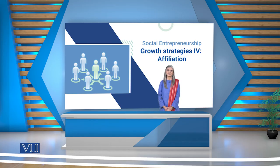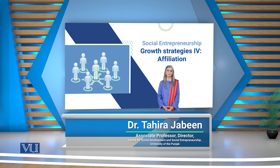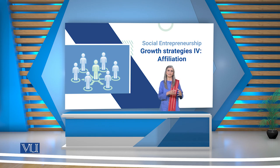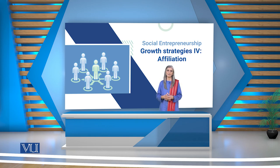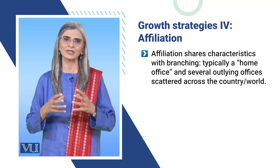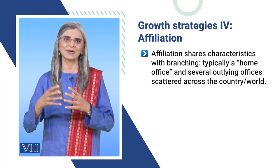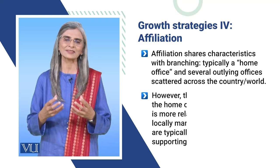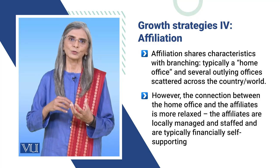Assalamualaikum students. Scaling के हवाले से एक scaling strategy जो popularly social entrepreneurs use करते हैं वो है affiliation. Affiliation की काफी characteristics जो है वो branching की तरह है — typically एक home office या parent organization का office होता है, और مختلف locations، مختلف cities، مختلف communities के अंदर nationally या globally affiliated offices होते हैं। Home office और affiliated offices के दर्मियान branching की निस्पत एक relaxed और less controlled relationship होता है।